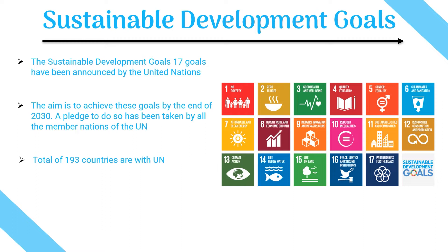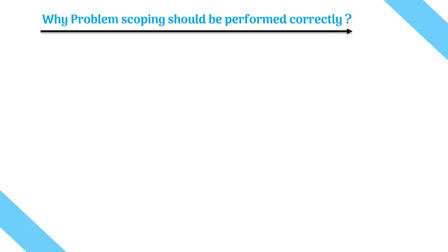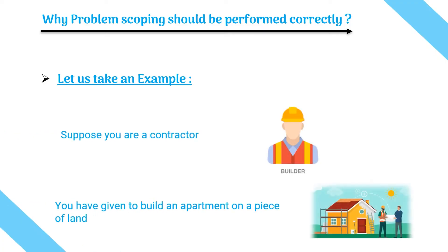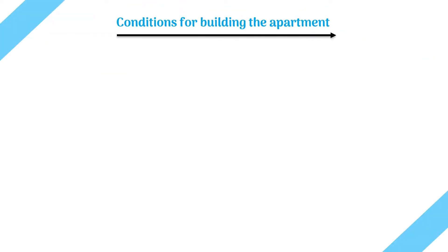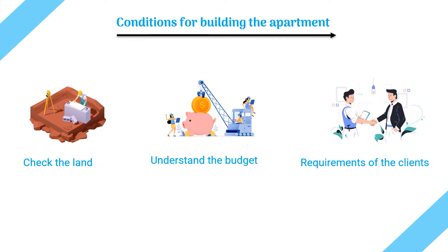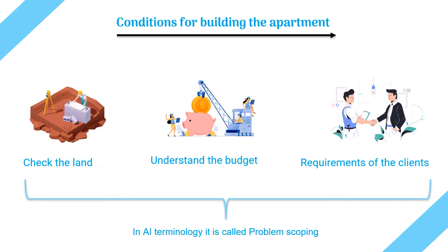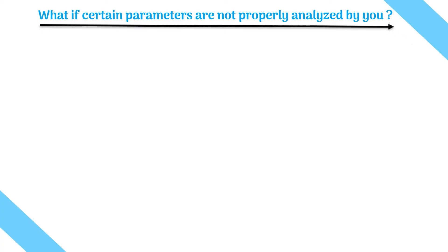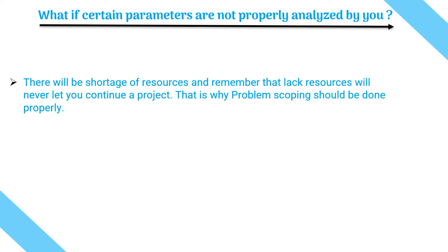Problem scoping is the first and elementary stage of the project cycle. If this stage is not performed correctly, then the whole project will be a total fail. To understand why, suppose you are a builder and you create an apartment on a piece of land. The first thing you will do is check the land, understand the budget, and the requirements of the client — which in AI terminology is called problem scoping. If those parameters are not properly analyzed, there will be a shortage of resources, and lack of resources will never let you continue your project. This is why problem scoping should be done properly.